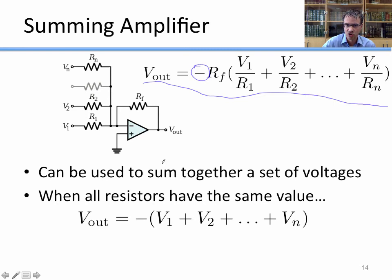But this can be used to sum together all of these voltages. And if you want to do it cleanly, you just make RF, R1, R2, blah, blah, blah, through Rn, all the same value. So if all the resistors have the same value, then this equation reduces to this, which simply shows that the Vout equals the inversion of the sum of all of the input signals. So you could take different signals, input them into this op amp, and you could sum them all together to get an output.